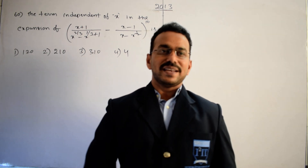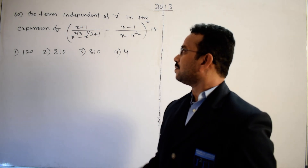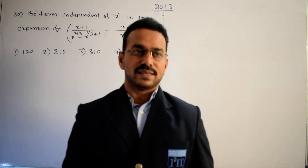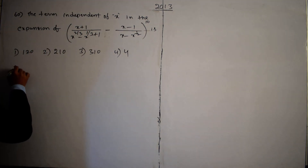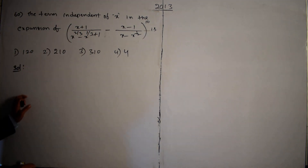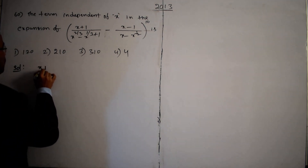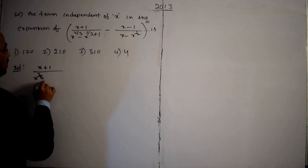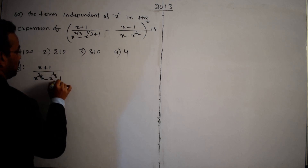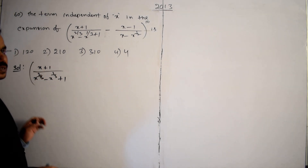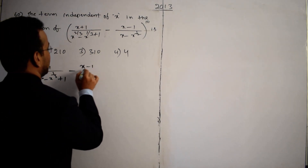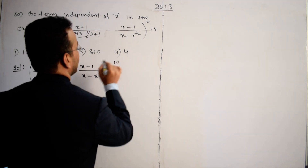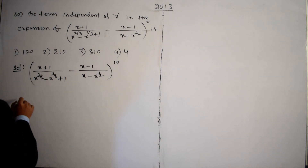The given expansion is very lengthy. First let's simplify it using simple logic, and then we find the independent term of x. Let's write the given expansion: (x + 1) / (x^(2/3) - x^(1/3) + 1) minus (x - 1) / (x - x^(1/2)) whole power 10.